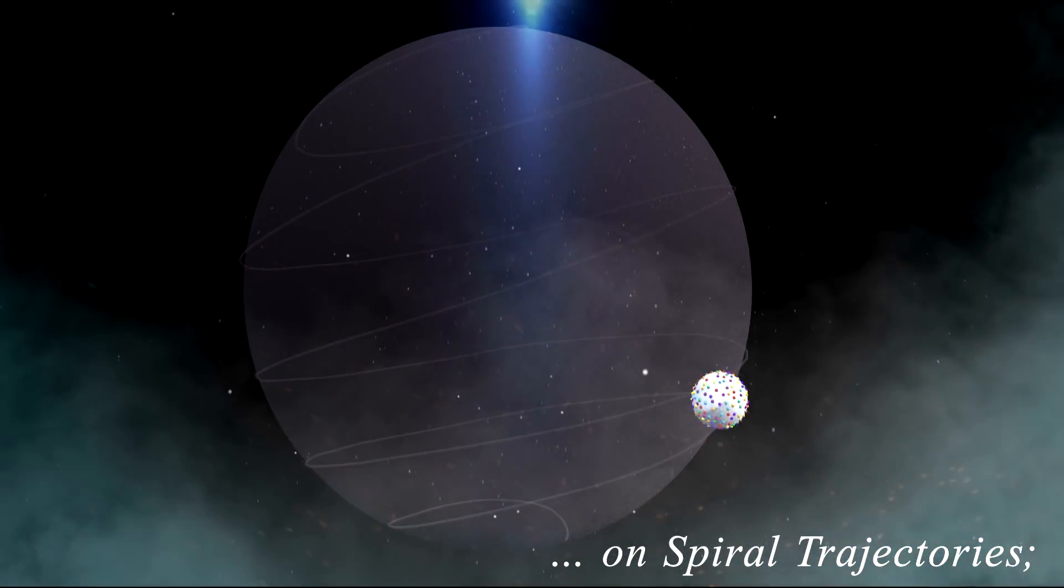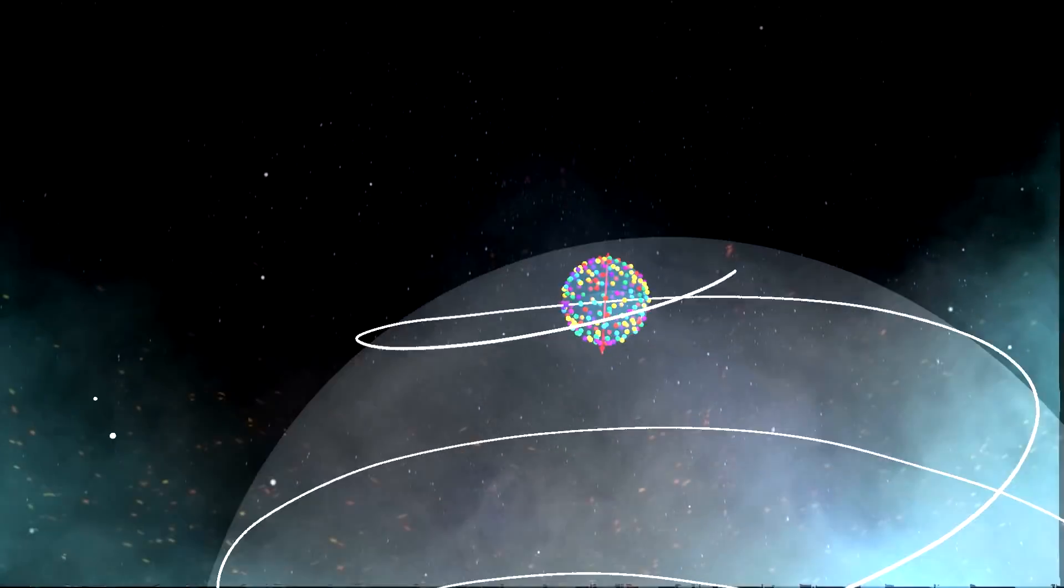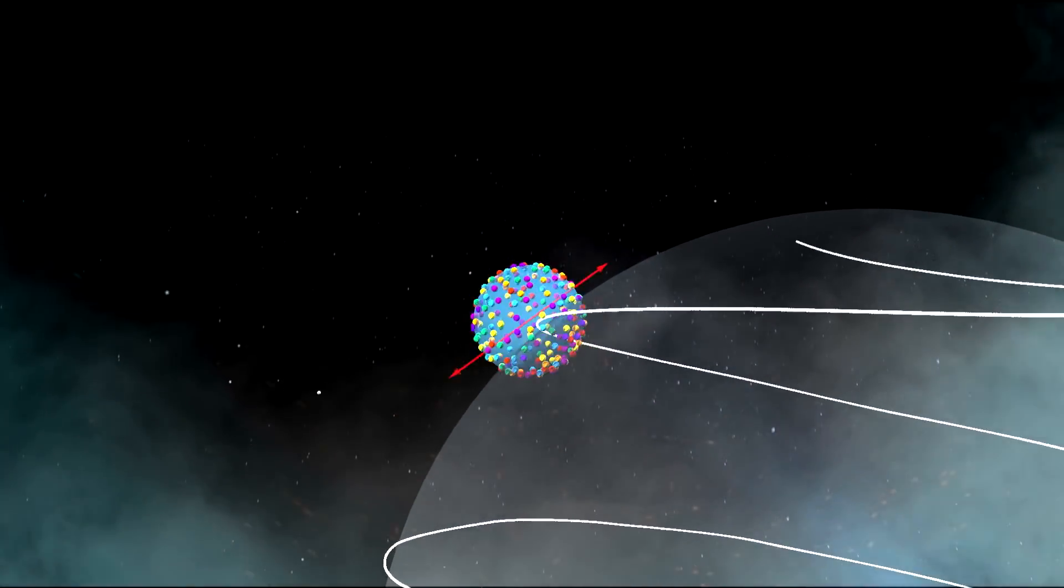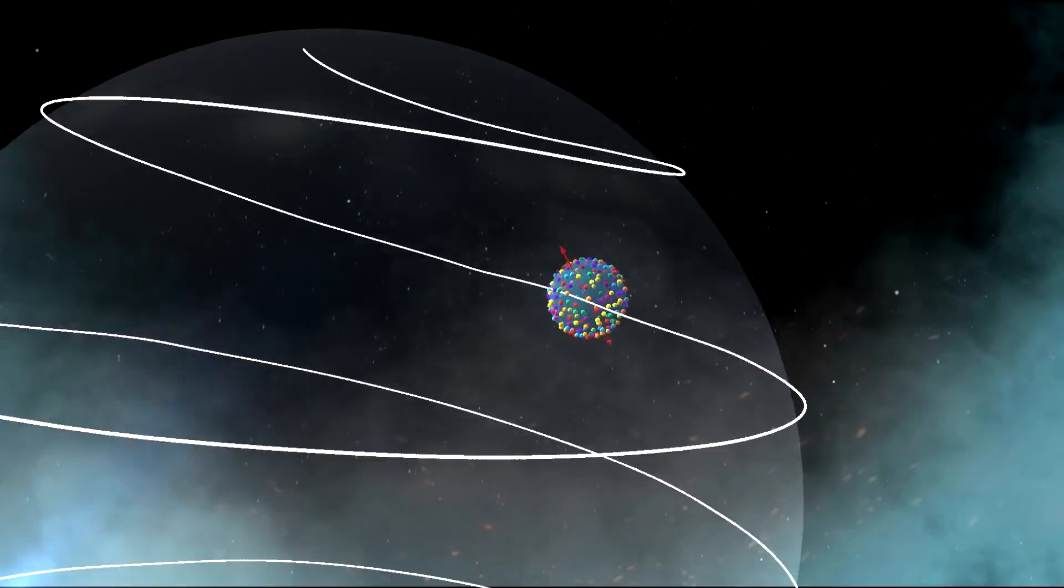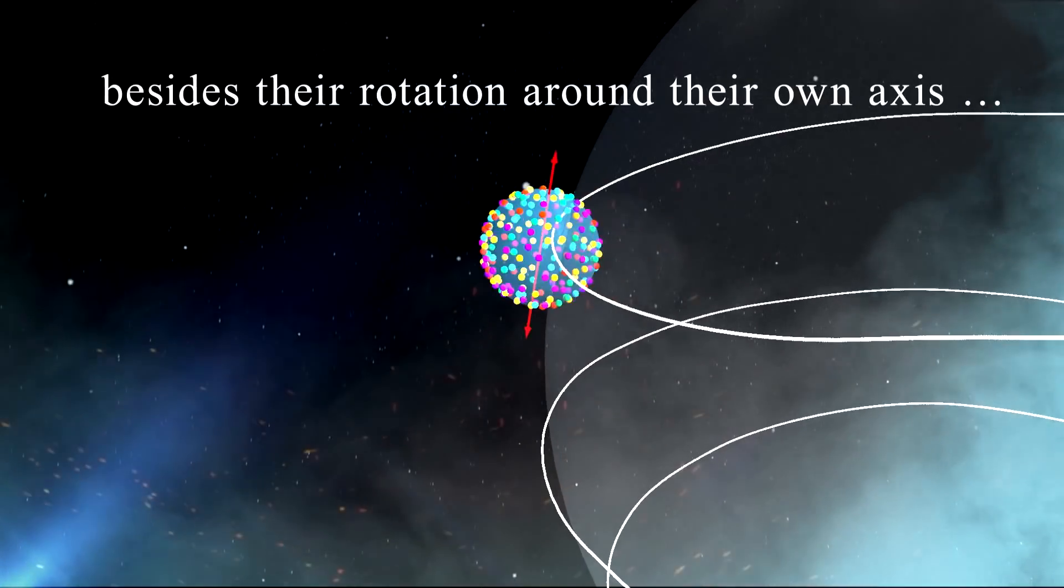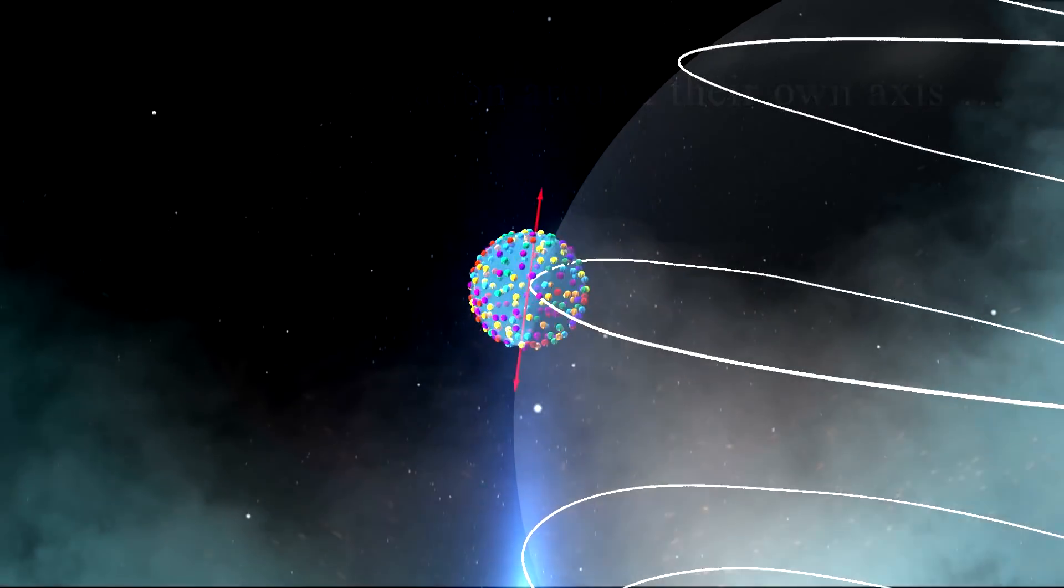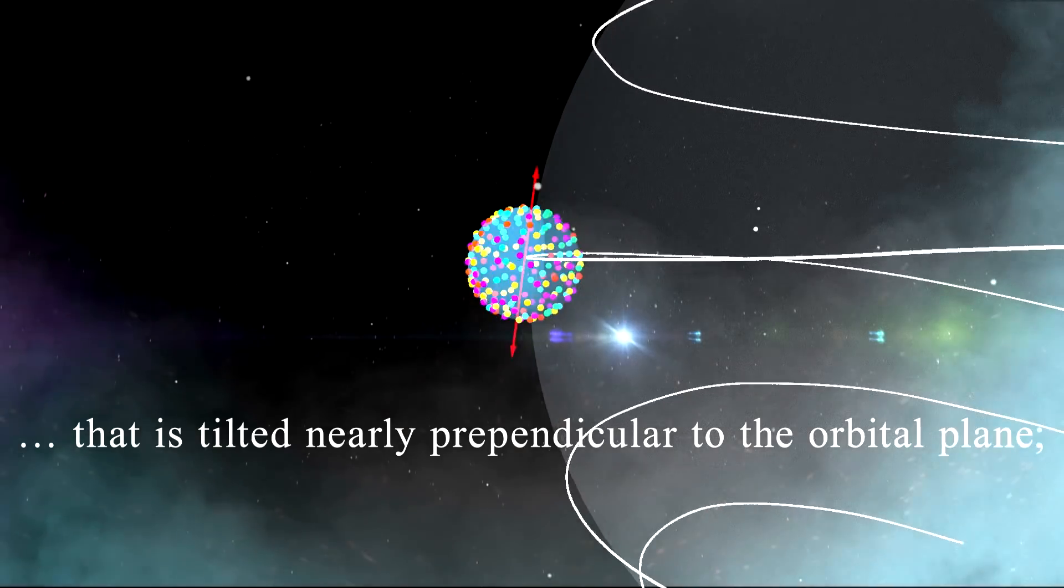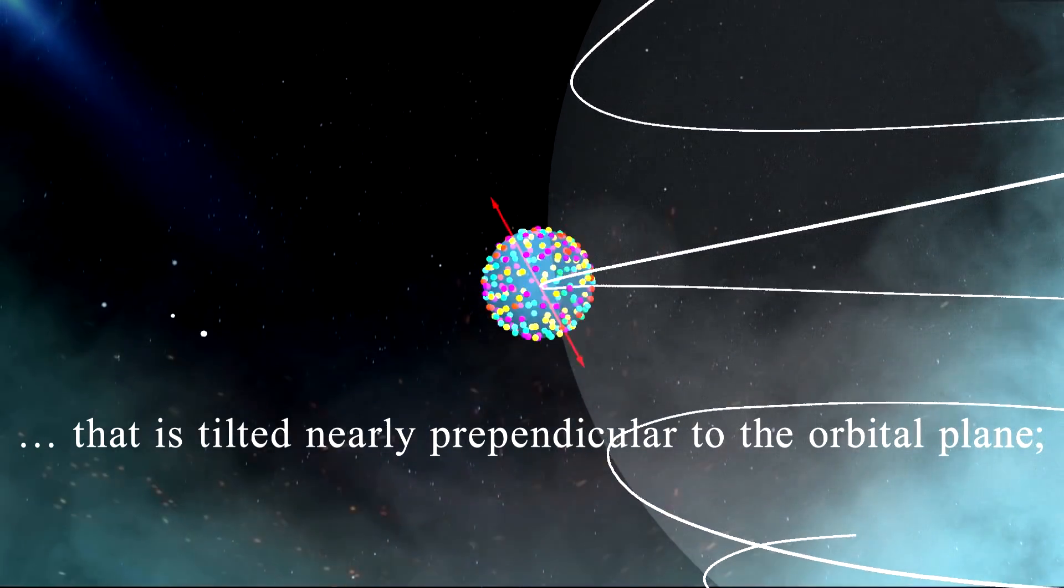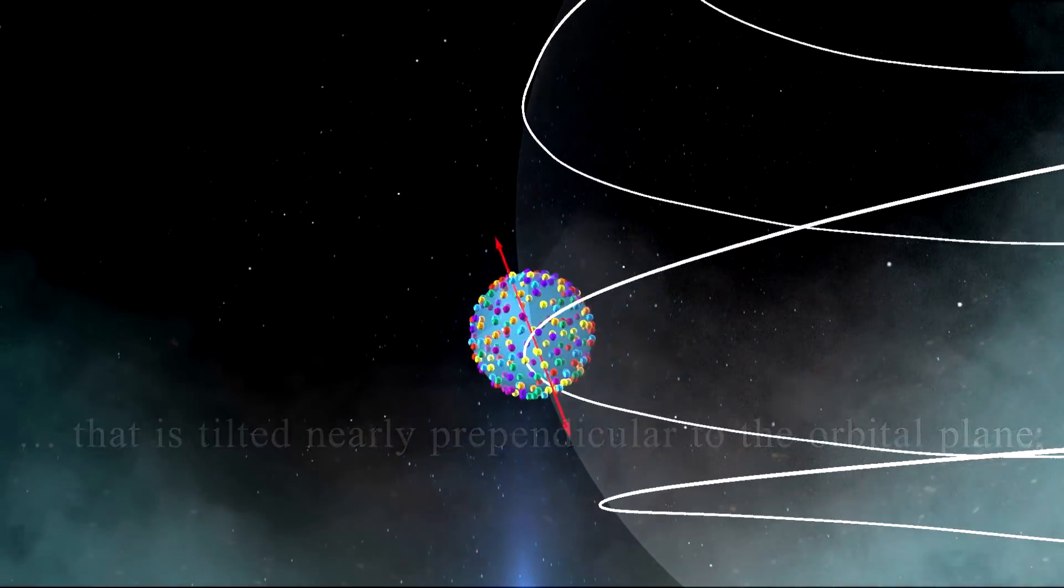A spiral trajectory. Besides this spiral motion on the electron's sphere, photons turn also around their own axis that is tilted nearly perpendicular to the orbital plane.